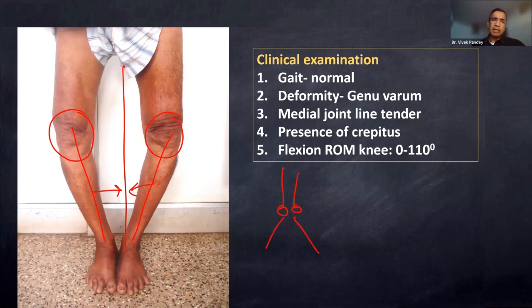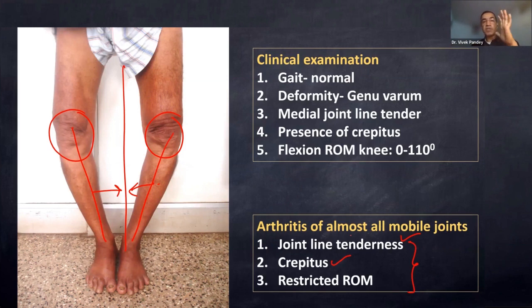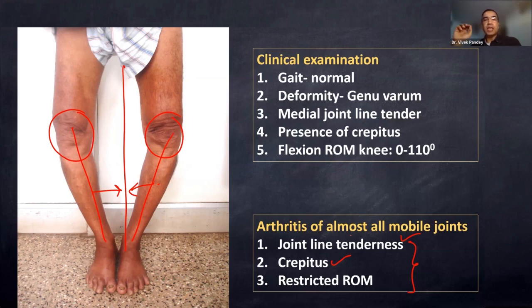The joint line was tender, and moving the joint produced a crackling noise — crepitus — with limited range of motion (normally 120 to 130 degrees). In any arthritis of any joint, there are three key features: joint line tenderness, crepitus (because the cartilage surface is lost and the rough surfaces rub), and restricted range of motion due to synovitis, capsular contracture, and osteophytes. These fundamentals apply whether examining the shoulder, elbow, wrist, hip, knee, or ankle.